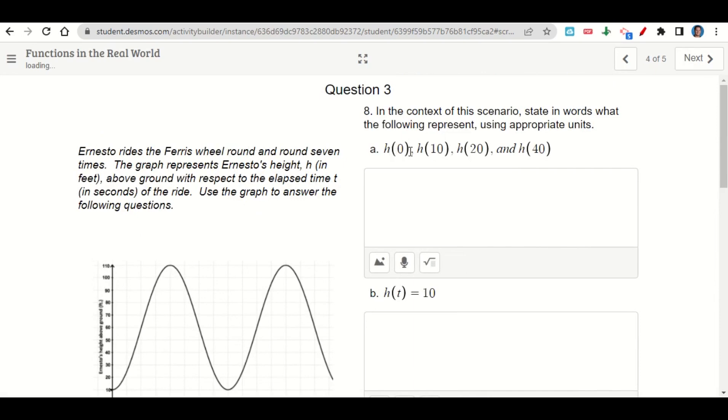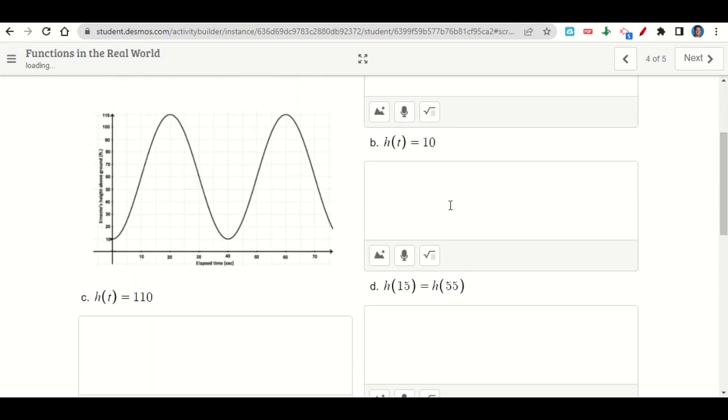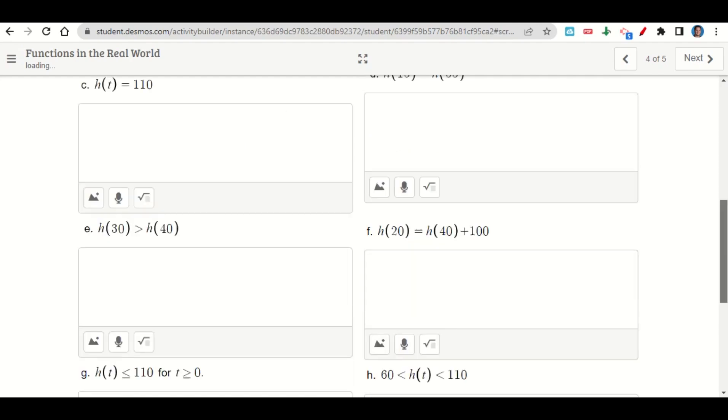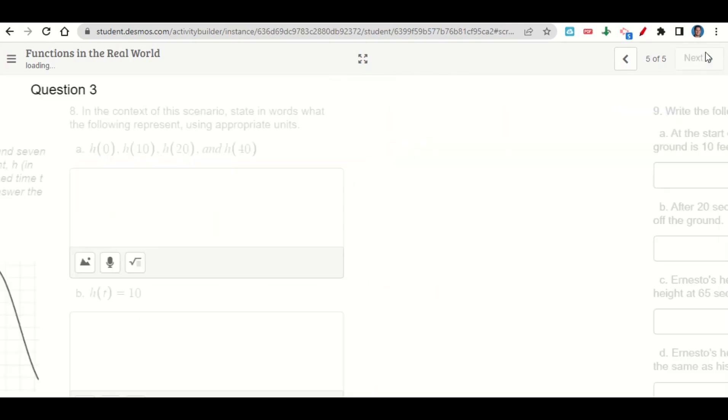Now it wants to know h of 0, h of 10. So where is he at 0 seconds, 10 seconds, 20 seconds, and 40 seconds? This one is when is his height 10? So his height is 10 right here and right here. So you'll state where that is. You'll answer each of these questions, and then we'll click next.